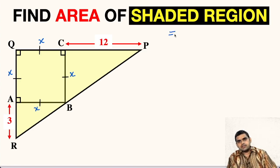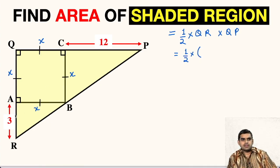Now, area of this shaded region will be the area of right triangle, which is half times its base multiplied with its altitude. We can take QR as its base and altitude as QP. We can substitute the value in terms of X. This will be half times QR will be 3 plus X, times QP will be 12 plus X.